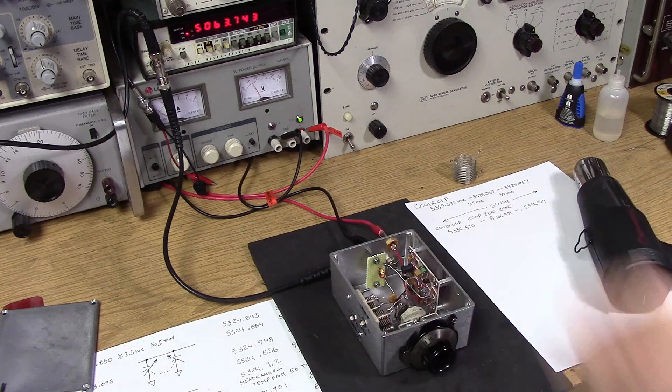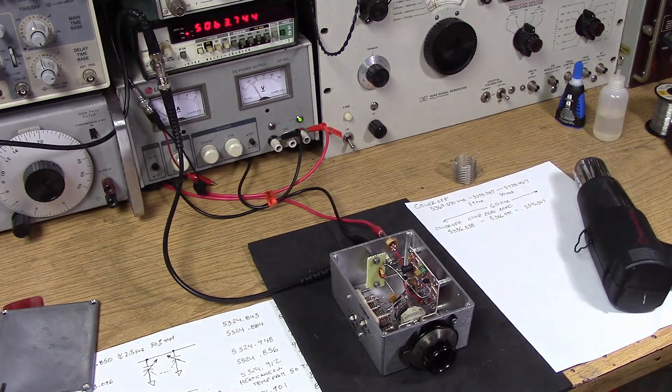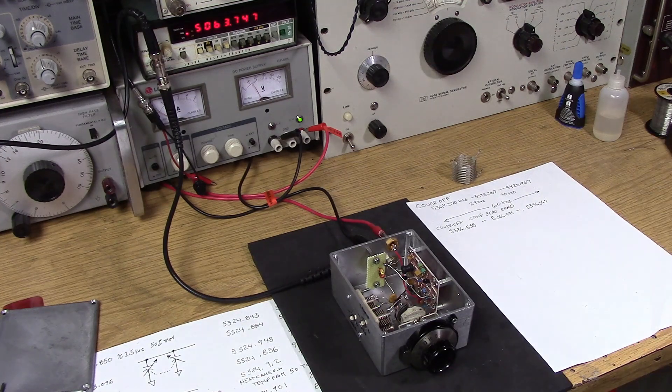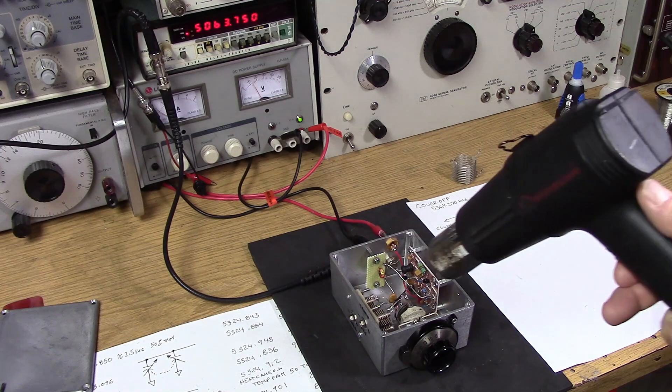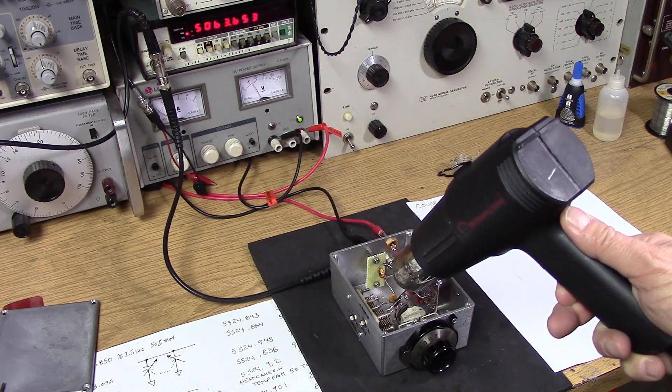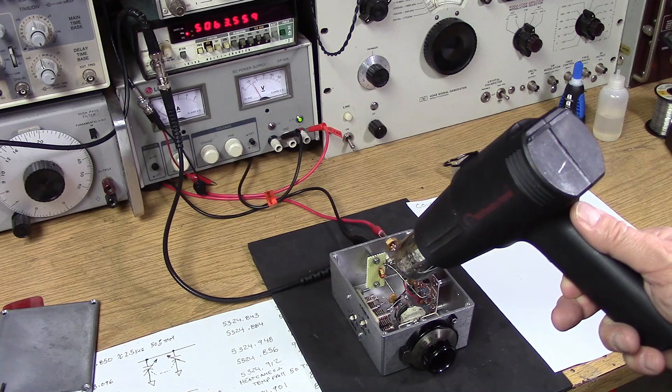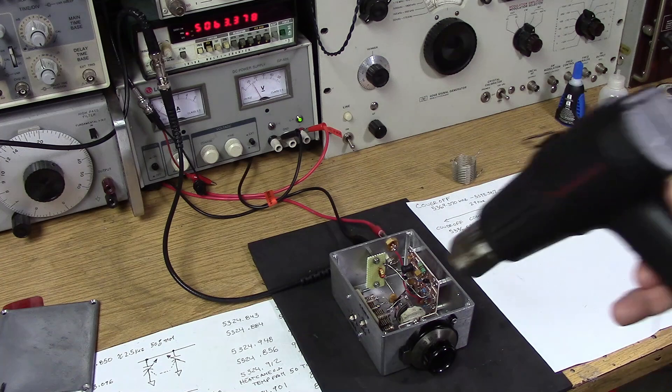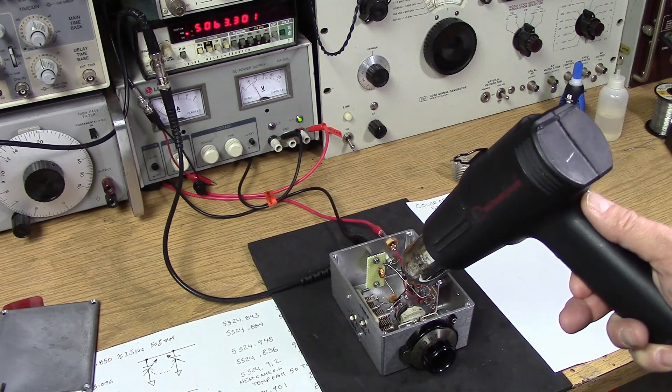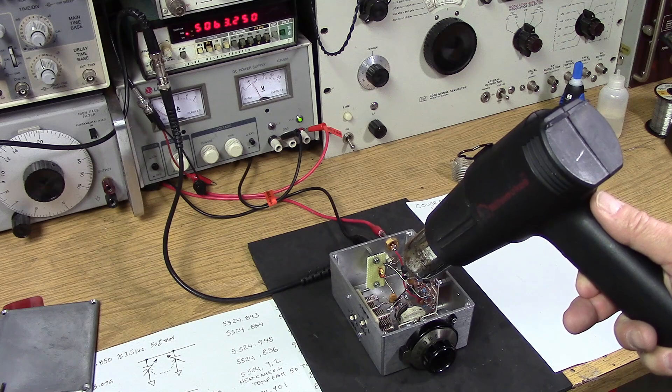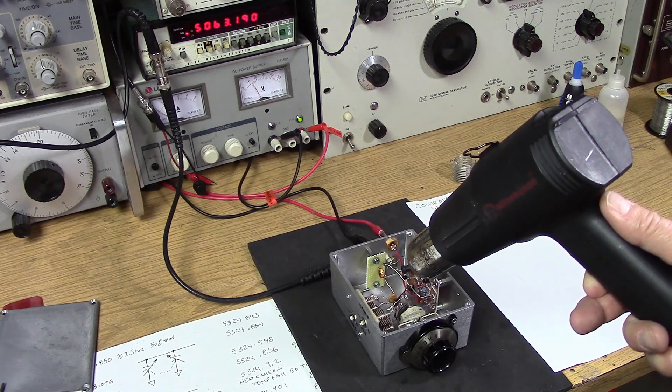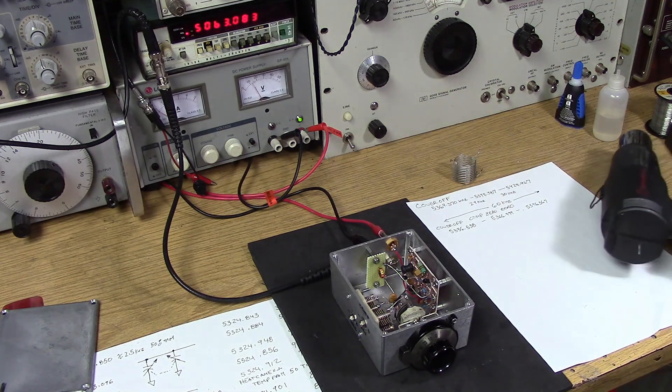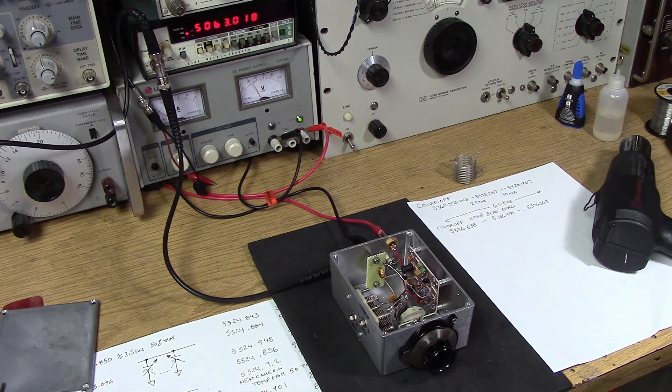So I put the positive compensation on maximum with the cover off, and I'm just going to try to hit the capacitors with the heat gun to see if there's any effect. Okay, you can see the frequency is going down. So that's positive compensation - frequency goes down.